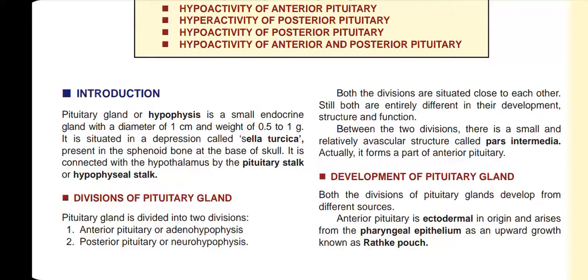Between the adenohypophysis and neurohypophysis there is a structure called pars intermedia. The pars intermedia is considered as part of the anterior pituitary gland. So we know anterior pituitary and posterior pituitary as two divisions. They are located close to each other but differ in development and function. The pars intermedia is one of the avascular structures.